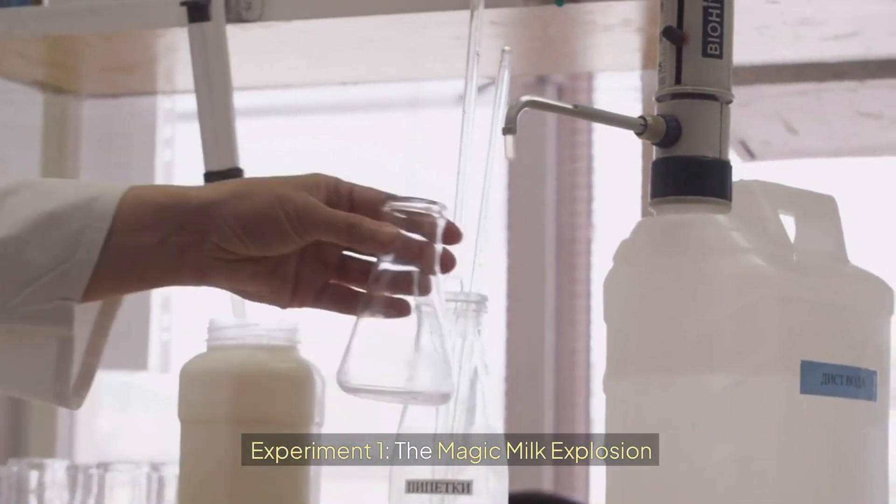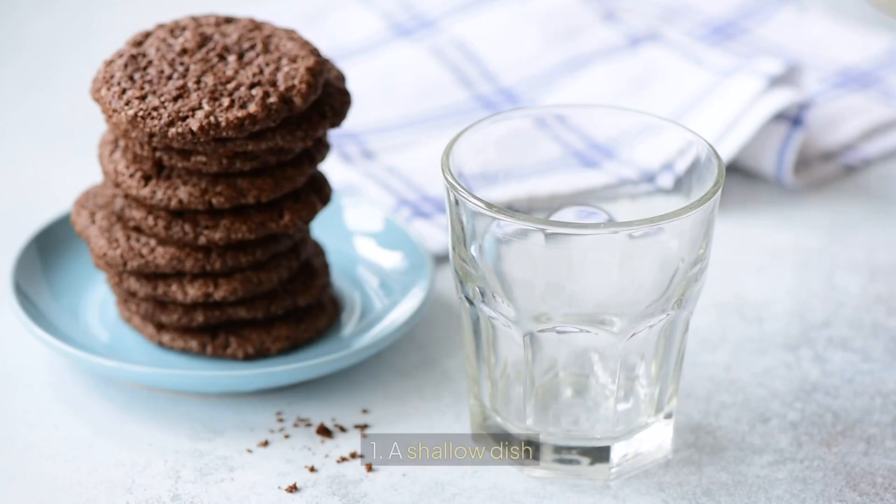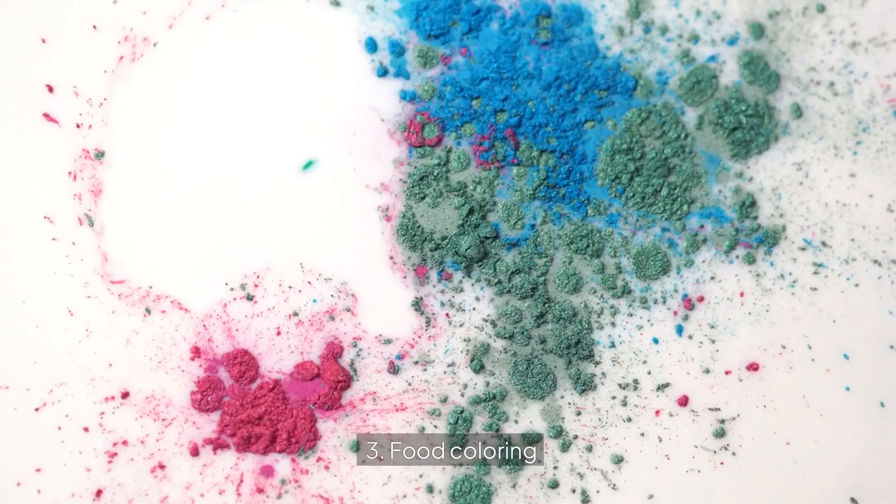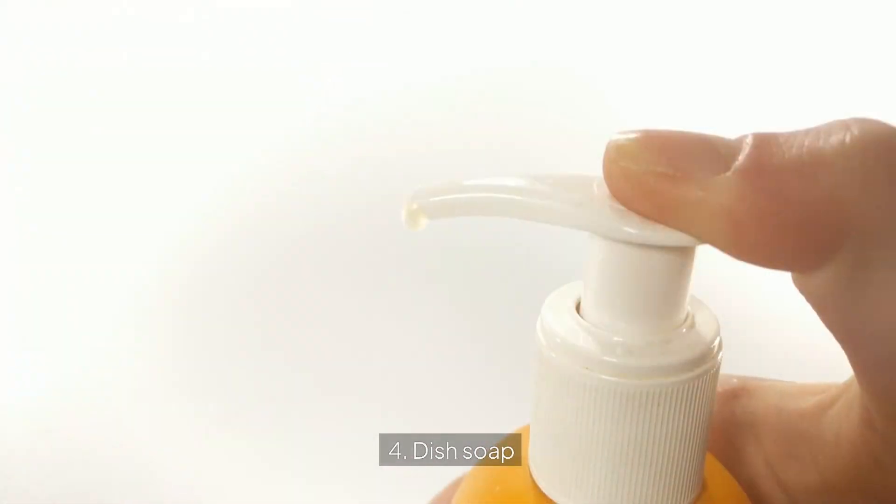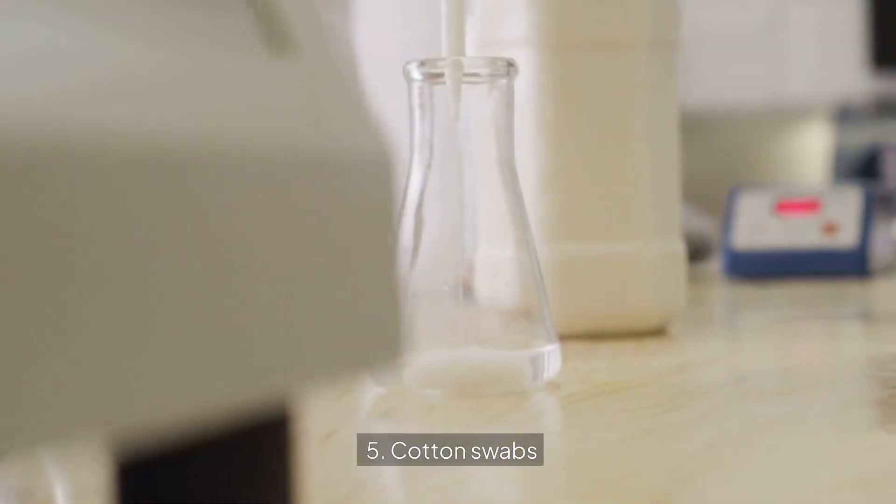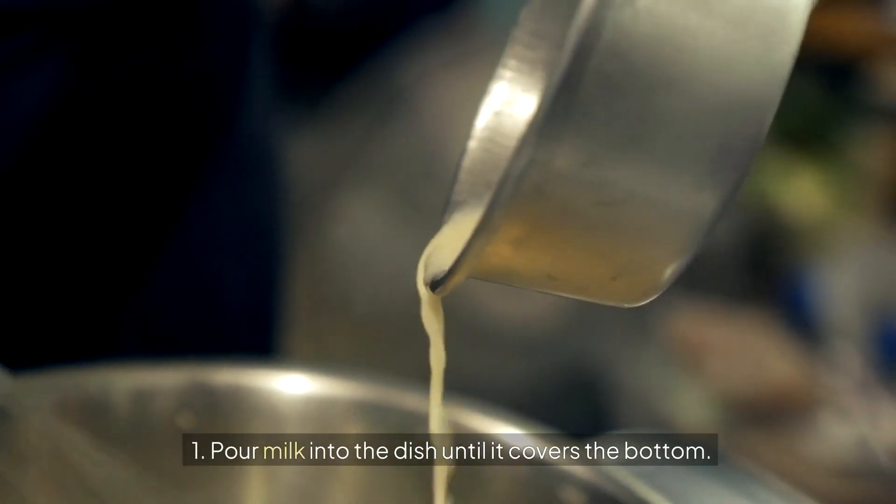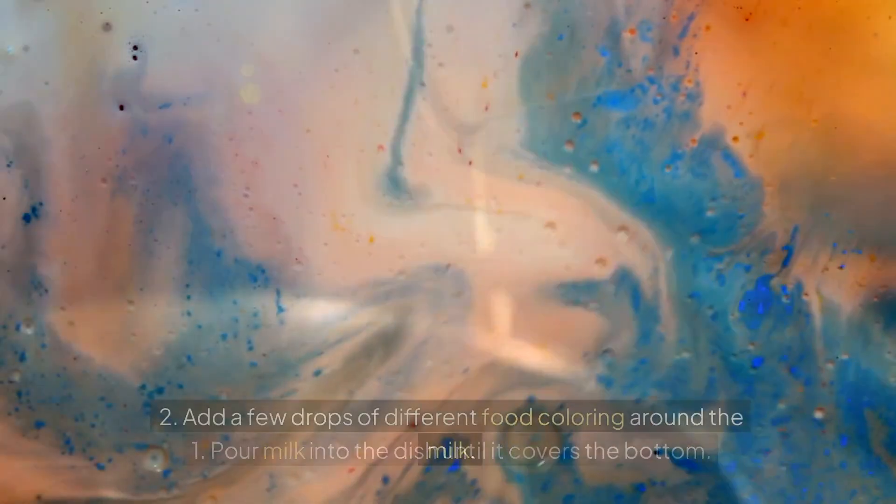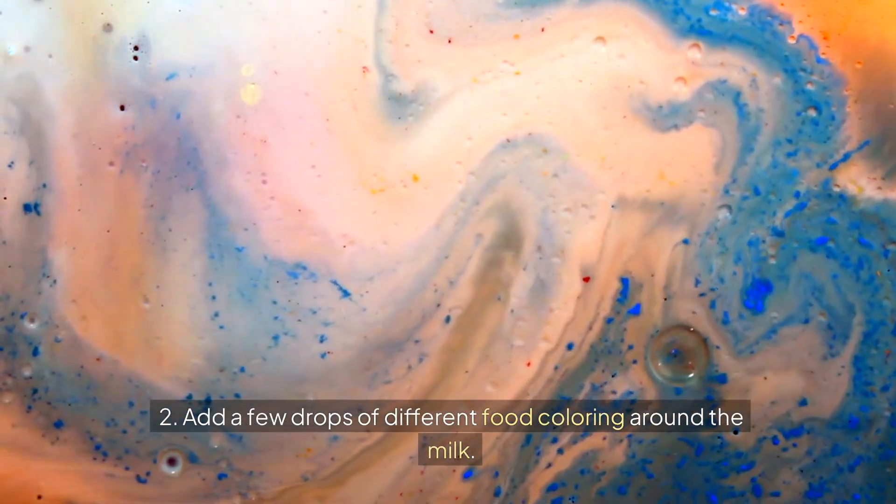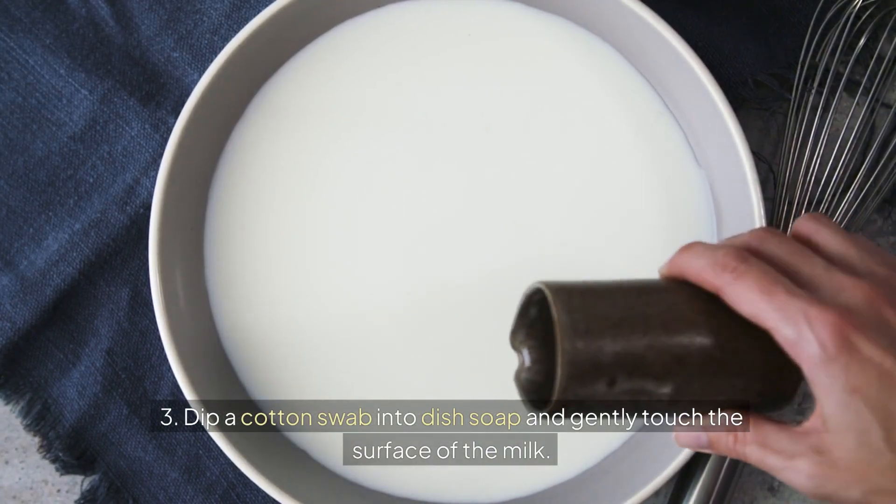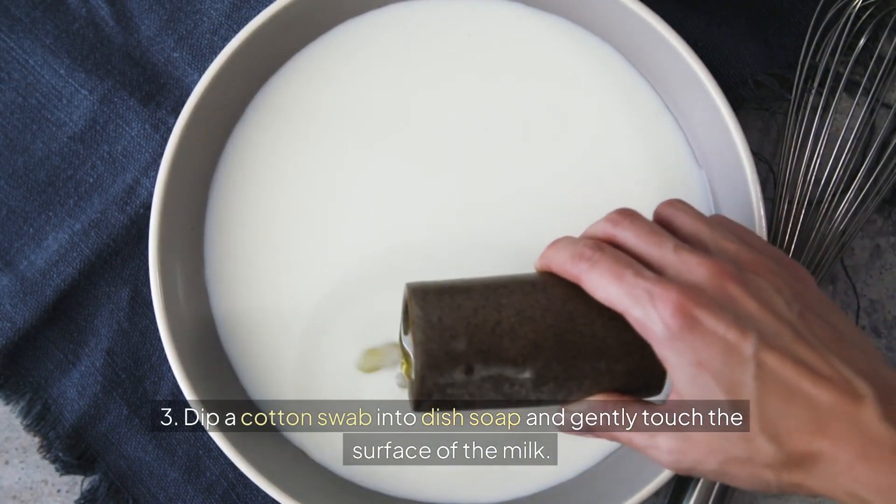Experiment 1: The magic milk explosion. Supplies: a shallow dish, whole milk or 2%, food coloring, dish soap, and a cotton swab. Steps: Pour milk into the dish until it covers the bottom. Add a few drops of different food coloring around the milk. Dip a cotton swab into dish soap and gently touch the surface of the milk.